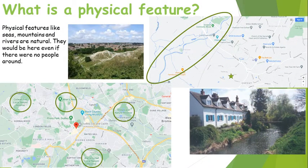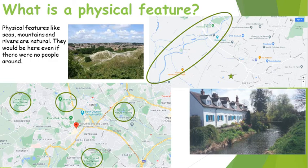Now let's have a look at physical features. Physical features like seas, mountains and rivers are natural. They would be around even if there were no people, because people didn't have anything to do with them. Nature created them — it just happened and it's a natural physical feature in the area.